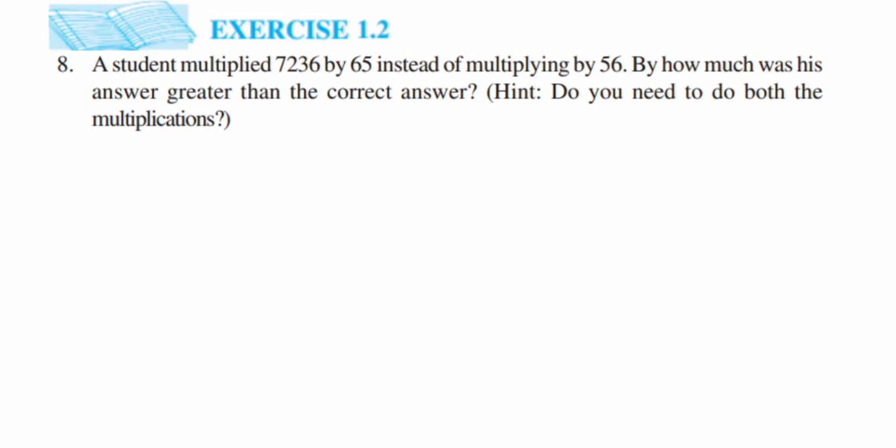Hey everyone, so here's a question from exercise 1.2, the 8th question. This is from the Knowing Our Numbers chapter of class 6. The question is: a student multiplied 7236 by 65 instead of multiplying by 56. By how much was his answer greater than the correct answer? They have given a hint also: do you need to do both the multiplications?